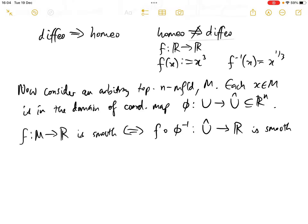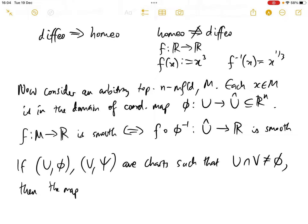So let's now take two charts on the manifold M. If (U, phi) and (V, psi) are charts such that their intersection is non-empty, then the map psi composed with phi inverse. So where would this go from?